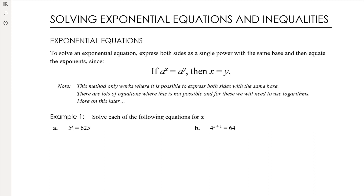The first strategy we want to look at is really focused on index laws. Our first aim, if it's possible, is to express both sides of the exponential equation as a single power with the same base, and then we can equate the powers. So what we're aiming for is: if we can get it written as a to the power of x equals a to the power of y, then the only way that's true is if x equals y.